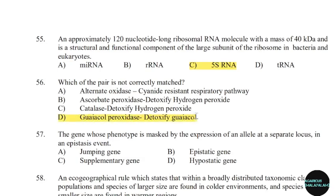57th question: The gene whose phenotype is masked by the expression of an allele at a separate locus in an epistasis event. Correct answer: Option D — Hypostatic gene.